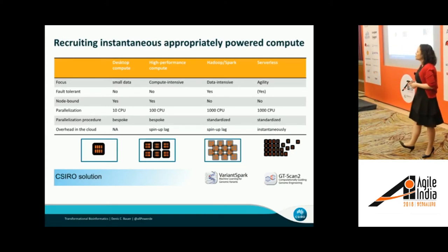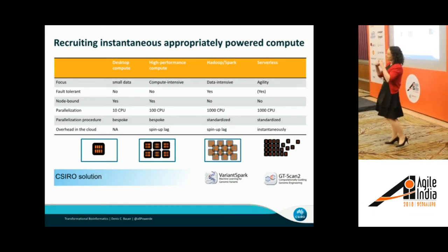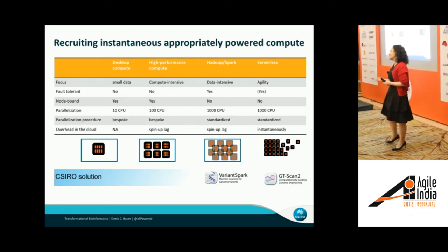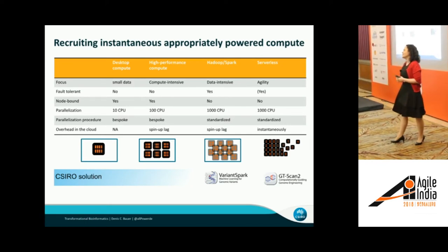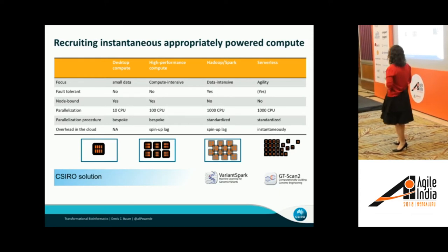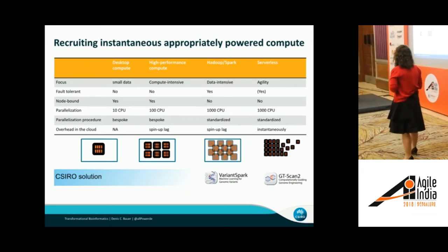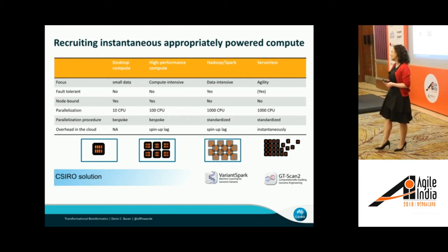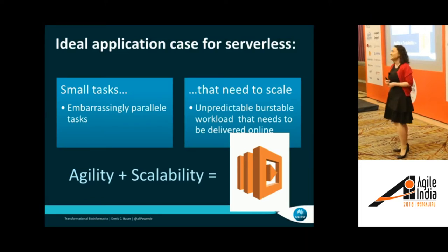Skipping ahead — this is how I think about serverless architecture. Coming from desktop compute with a singular CPU, the next iteration was high-performance compute with many CPUs. Hadoop and Spark resolved the boundary between CPUs, enabling parallelization in a standardized fashion for truly data-intensive tasks. Serverless, in my mind, is the agile way of processing data — it recruits instantaneously exactly the number of CPUs you need, so you only pay for what you actually use.